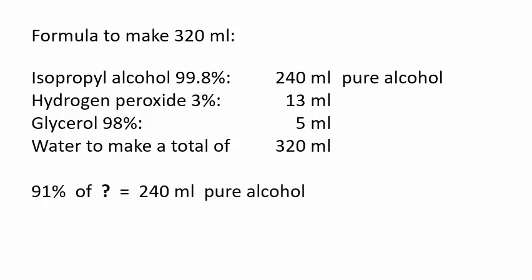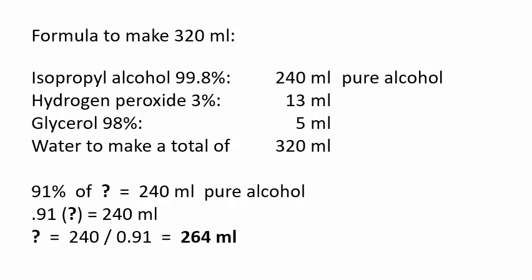If you are using 91% alcohol, you need to use an amount which I show as a question mark. 91% of that question mark equals 240 milliliters of pure alcohol. This is an algebra problem: 0.91 times the question mark equals 240. Divide both sides by 0.91 — 240 divided by 0.91 equals 264 milliliters.